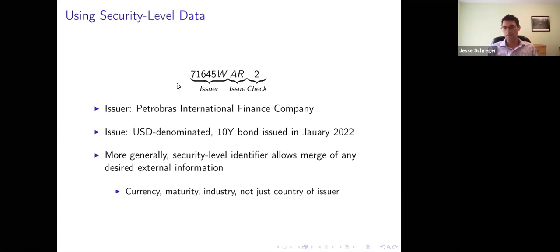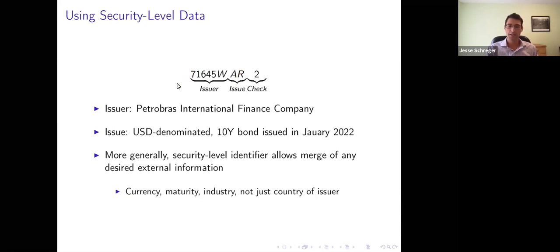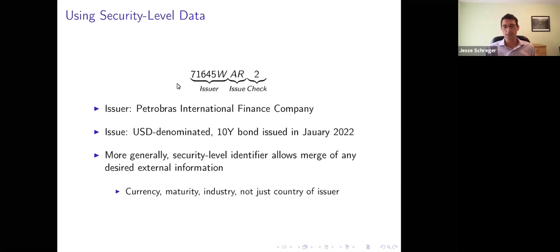In our case that's the CUSIP9, the nine-digit code that uniquely identifies a security. You could also start with an ISIN or another security-level identifier. I've listed an example CUSIP of a 10-year bond issued by the Petrobras International Finance Company — a US dollar-denominated 10-year bond from January 2022. The first six digits identify the issuer entity; the next two digits identify the particular security being issued. When you begin with a security-level information, you can merge in whatever additional information you'd like — currency, maturity, industry, underwriter, market of issuance, governing law — to dig into what's driving an aggregate pattern.